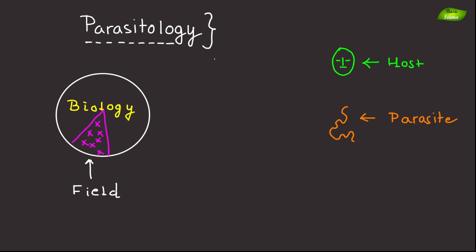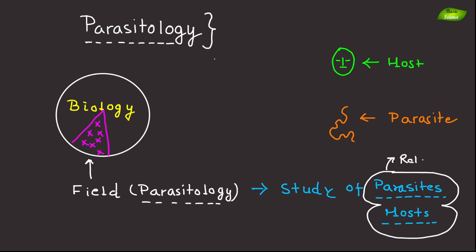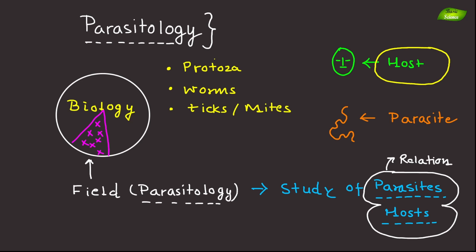Parasitology is a critical field of biology that involves the study of parasites and their hosts, as well as the relationship between them. This branch of science covers a wide range of organisms including protozoa, helminths, and arthropods — for example ticks and mites — which can live on or inside another organism, known as the host, and benefit at the host's expense.